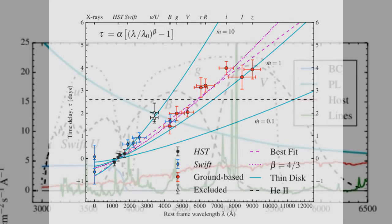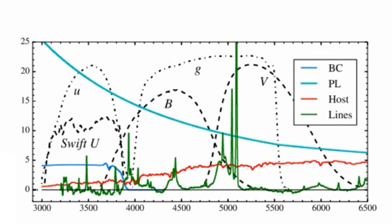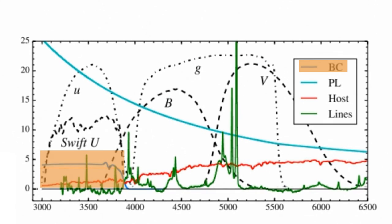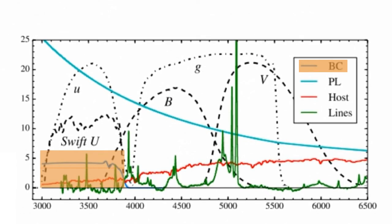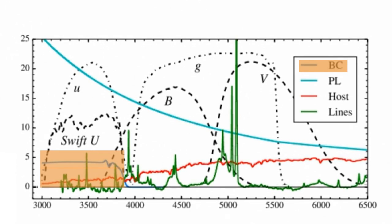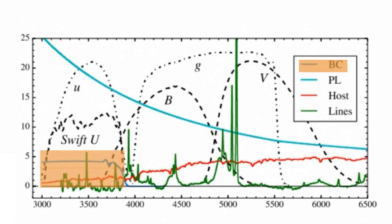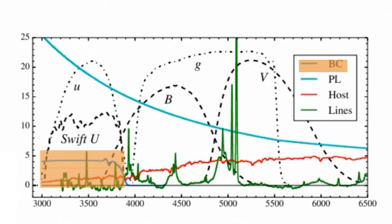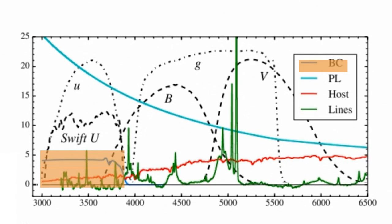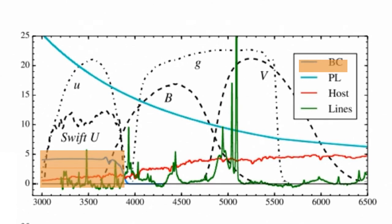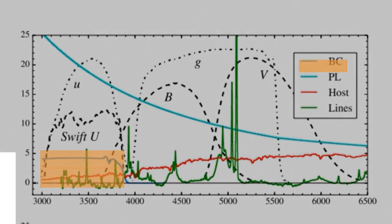Based on spectral decompositions and synthetic photometry, we show that the Balmer continuum accounts for approximately 19% of the emission in the SDSS-U and Swift-U bands. From experiments with mock continuum and line light curves, we find that this contamination probably accounts for the larger than expected lags in these bands. We therefore exclude the SDSS-U and Swift-U bands from the rest of our analysis.